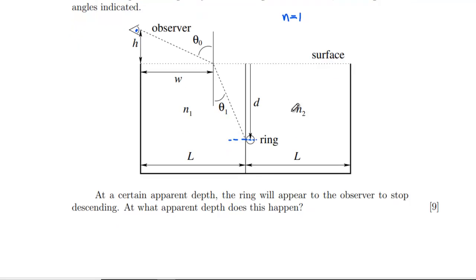So at a certain apparent depth - continuing this dotted line on, because that's where it looks like we're used to seeing things in straight lines - the ring will appear to the observer to stop descending. That sounds odd, so we have to try and understand what's going on. Let's call the apparent depth 'a' for apparent. As it drops down, this point here is going to be shifting side to side depending on where things are.